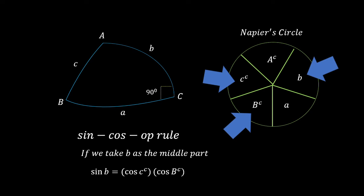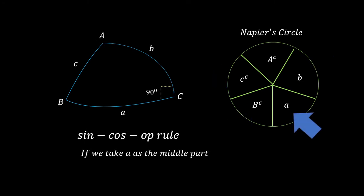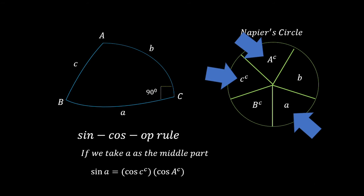Let's try a different middle part — say, a. If we take a as the middle part, its opposite parts are a-complement and c-complement. Applying the sin-cosine-of rule again: the sine of the middle part, which is sin(a), is equal to the product of the cosines of the opposite parts: cos(c-complement) × cos(a-complement).